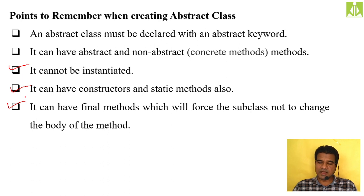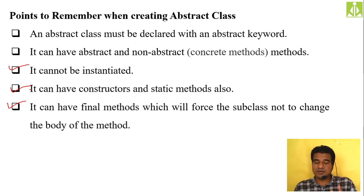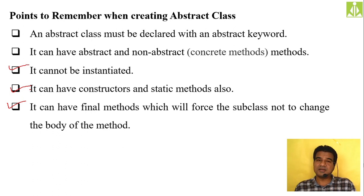An abstract class can have final methods, but only the non-abstract methods can be final. You cannot make an abstract method as final — because an abstract method has no implementation, and making it final without implementation causes an error. Only non-abstract methods inside an abstract class can be final.